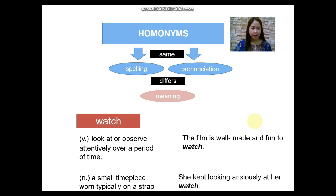Under lexical semantics, we have homonyms. Homonyms consist of two morphemes. The first one is 'homo,' which means 'same.' The other morpheme is 'nym,' which means 'name.' Homonyms means the same name, or they share something in common. Meaning to say, homonyms are words with the same spelling and pronunciation but differ in meaning.